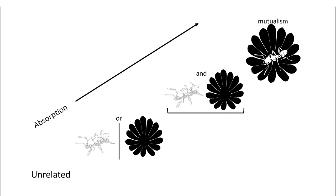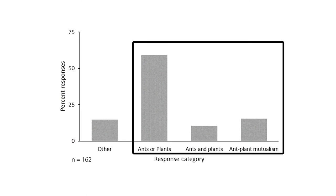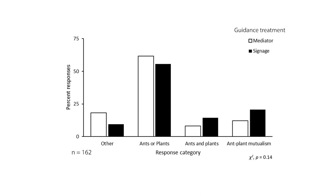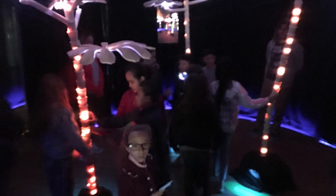Overall absorption was high, with 15% of people mentioning the ant-plant mutualism and 85% mentioning some combination. While the differences in absorption between guidance methods was not statistically significant by chi-squared tests, we found video and text signage without a human mediator to be slightly more effective at communicating our target concept. Allowing the visitor time and space to explore an art exhibit on their own seems to be an extremely effective science outreach format.